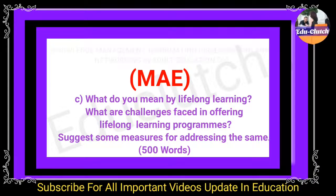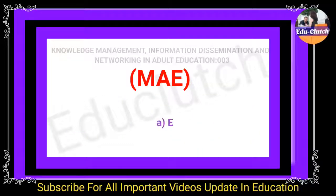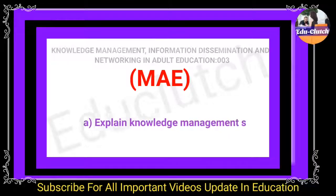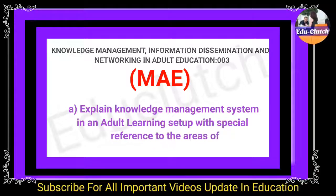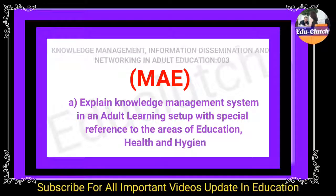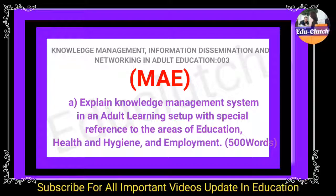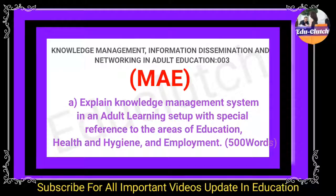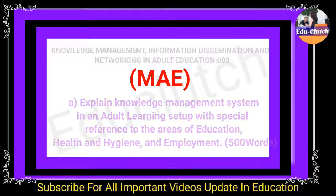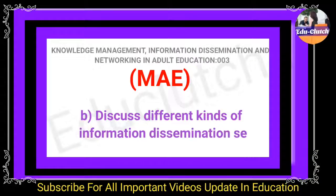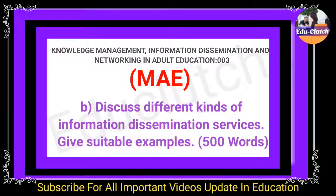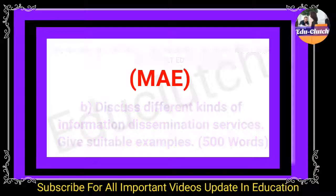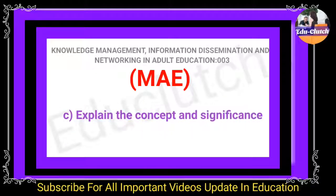First assignment is explain the knowledge management system in an adult learning setup with special reference to the areas of education, health and hygiene, and employment. Second is discuss different kinds of information dissemination services and give suitable examples.